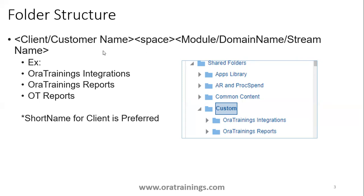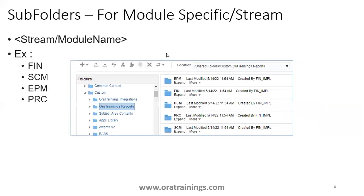You can have a client/customer name followed by the module name, domain name, or stream name. For subfolders, you can subdivide according to module, business process, or department — for example EPM, Financials, HCM, Procurement, Supply Chain, Projects, CRM. It's better to use short names — don't fully abbreviate, just use a shortcut.